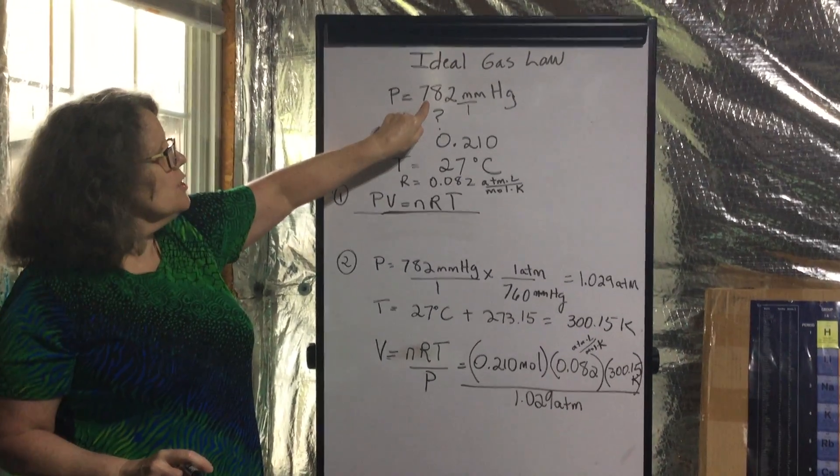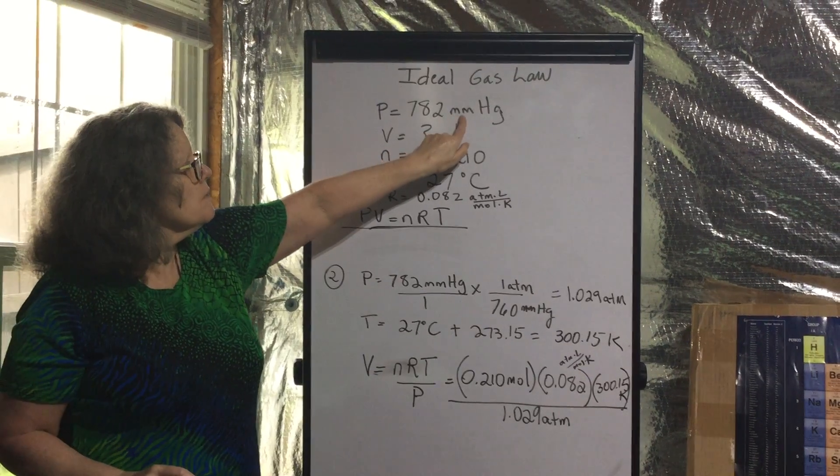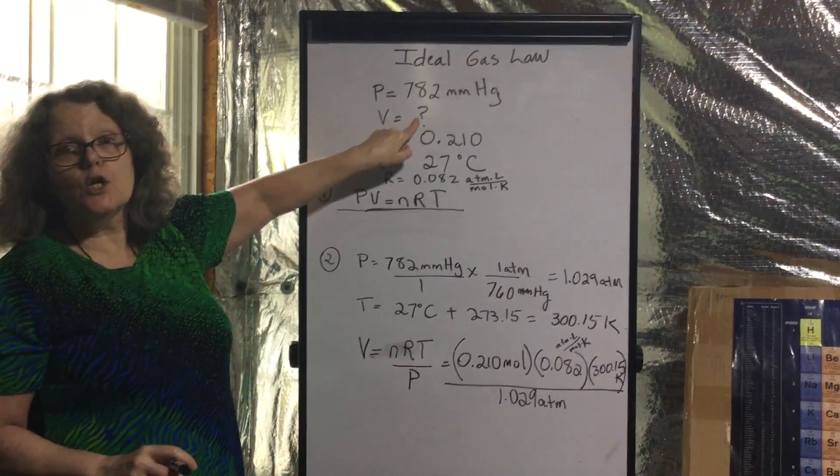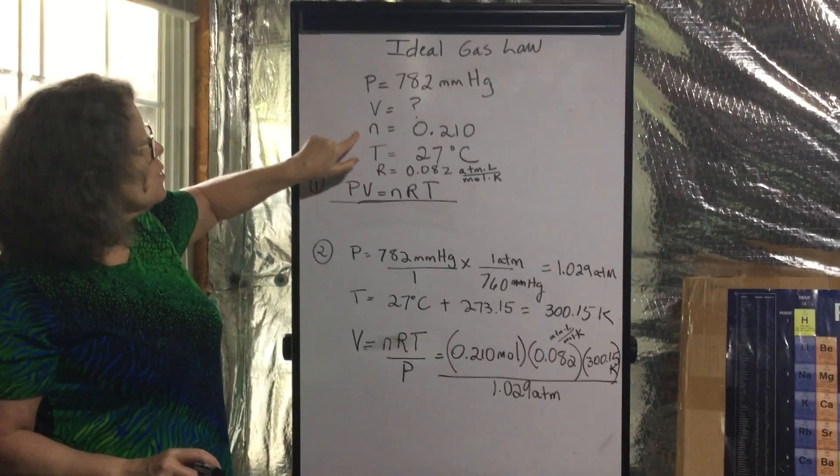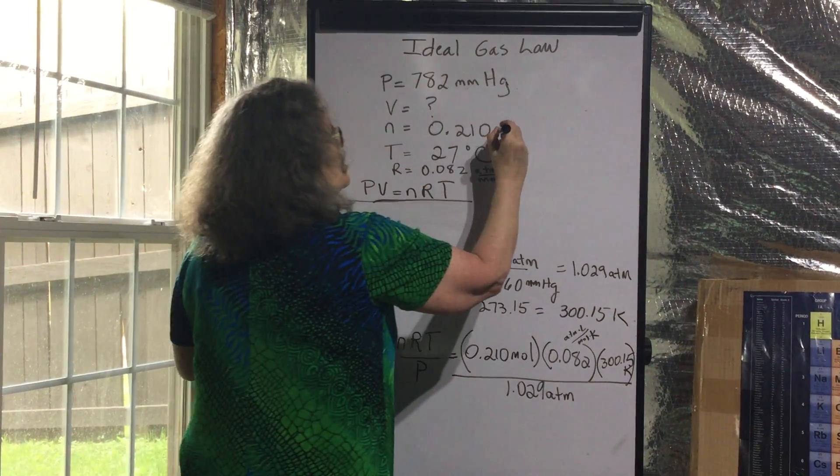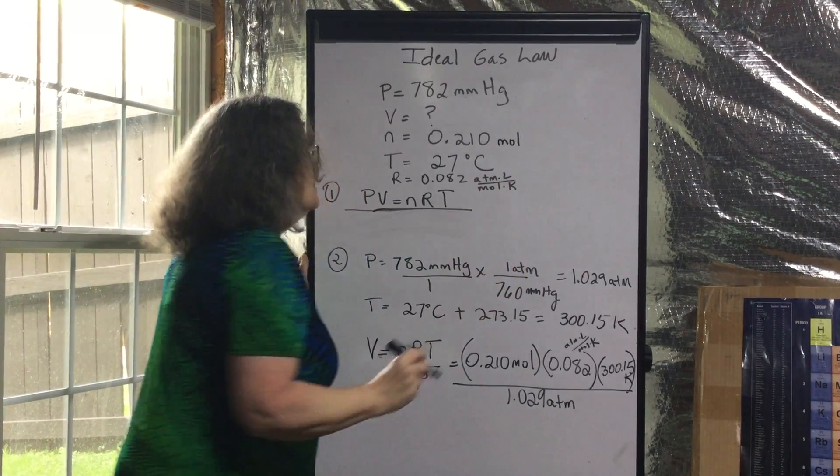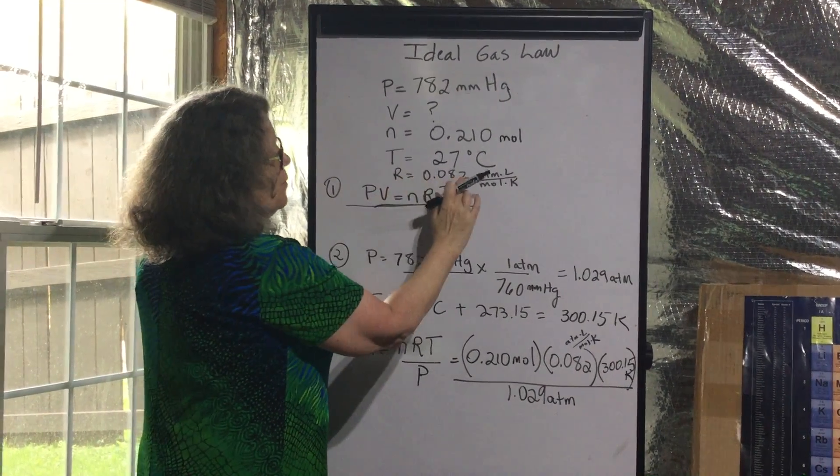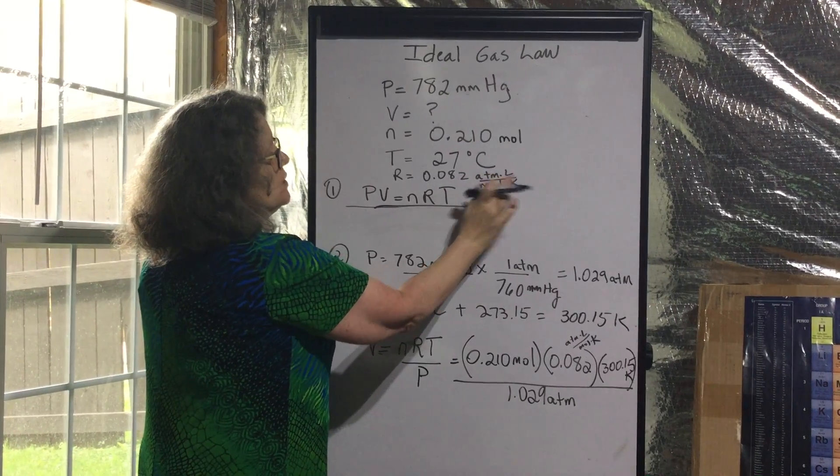pressure is given at 782 millimeters mercury. Volume is our unknown variable, the number of moles n is 0.210 moles, temperature is 27 degrees Celsius, and we know R is 0.082 atmospheres liters moles Kelvin.